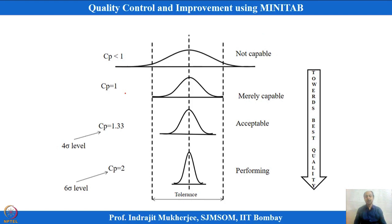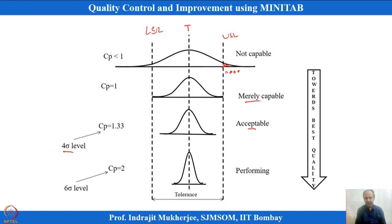When the process is not capable, some observations will fall outside the USL or below the LSL, causing rejections. A CP of 1 is merely capable, while CP of 1.33 corresponds to 4 sigma. Some companies may accept 1.33 as the minimum acceptable CP level. For excellent performance, CP should equal 2, equivalent to 6 sigma. Many industries follow 1.33 as the basic standard for accepting CTQ performance.